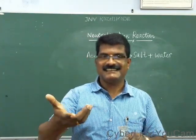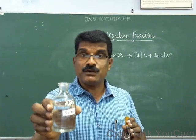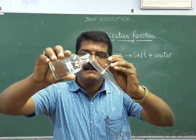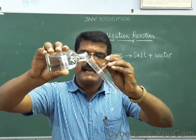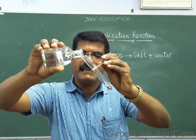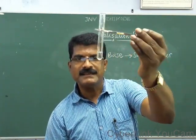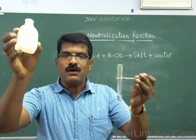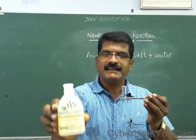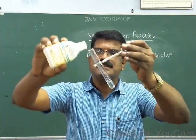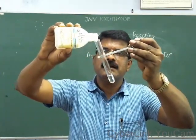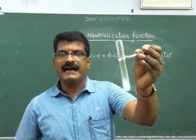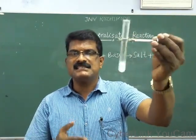I am going to take dilute hydrochloric acid in a test tube. I am pouring a few ml of dilute hydrochloric acid into a test tube. Dilute hydrochloric acid is colorless. Now I am going to add phenolphthalein indicator — 2 to 3 drops. 1, 2, 3. Three drops of phenolphthalein added. Still it is colorless.